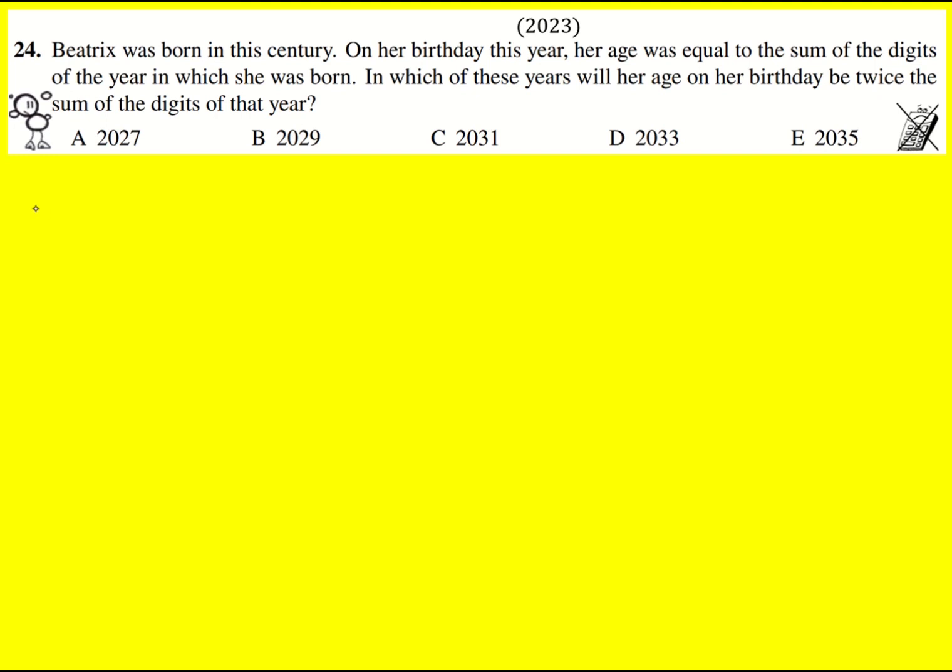So first thing I did when I say try numbers out is I just thought what if she was born say in 2017. Then the sum of the digits in that year are 10. However to get to 2023 it's only six years so that doesn't quite work.